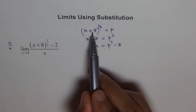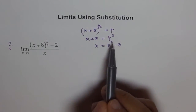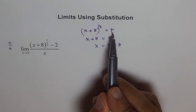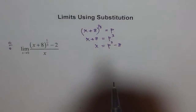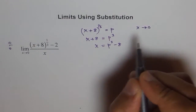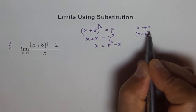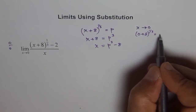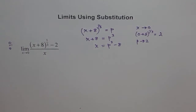With this substitution, we can replace the cube root factor with p and x with p cubed minus 8. Whenever we do substitution, the limit approach also has to be replaced. As x approaches 0, substituting 0 gives cube root of 8, which equals 2. So p approaches 2.